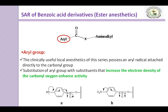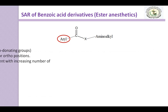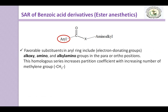Substitution of the aryl group with substituents that increase the electron density of the carbonyl oxygen enhances the activity. Structure A has electron donors, which increases polarization of the carbonyl group and increases binding to the receptor. Whereas structure B has electron acceptors, which decrease polarization of the carbonyl group and hence decrease activity. Favorable substituents in the aryl ring include alkoxy, amino, and alkylamino groups, which are electron donating groups attached to para or ortho positions.